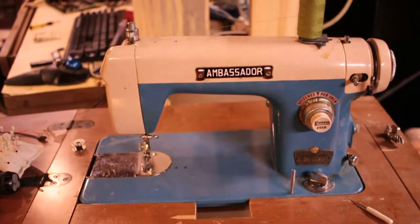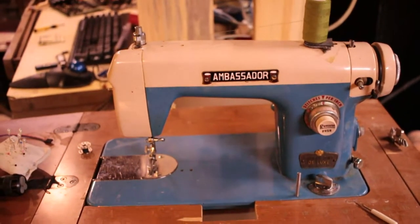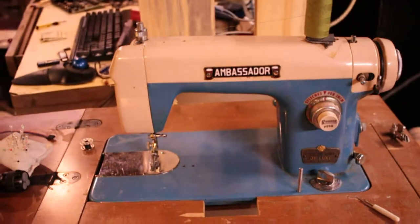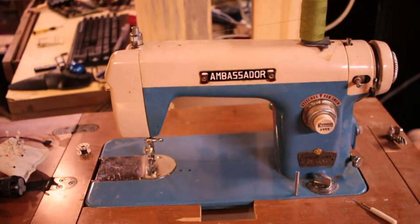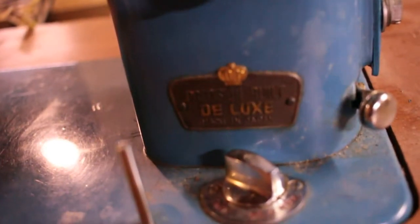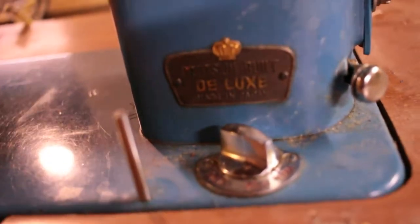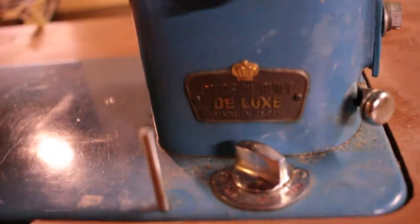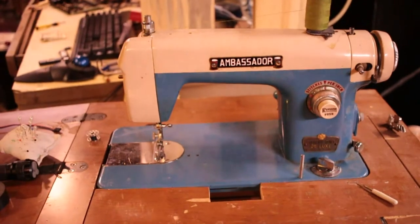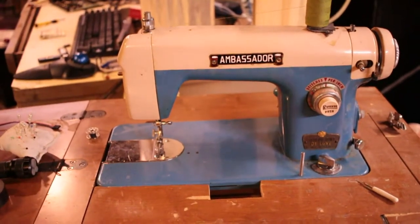This is my sewing machine that I got for free off of Craigslist. It is a Singer clone, Ambassador deluxe, made in Japan. A precision built deluxe made in Japan. It's a very bare bones machine. It's straight stitch only.